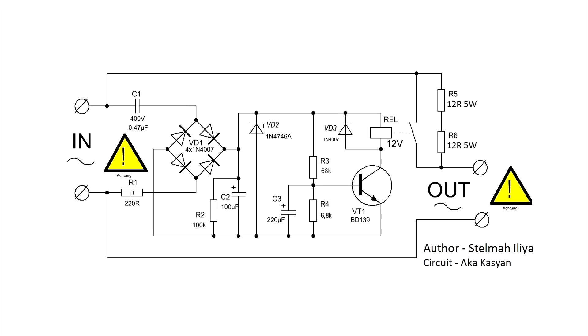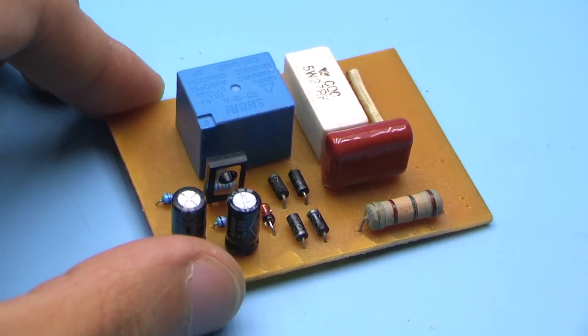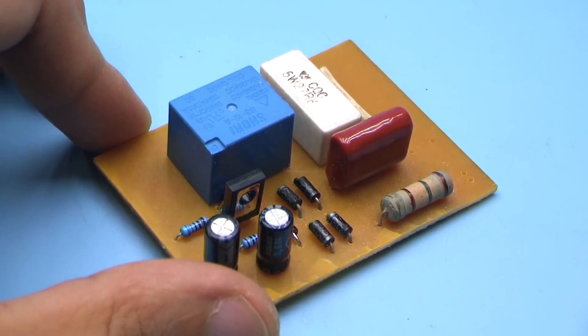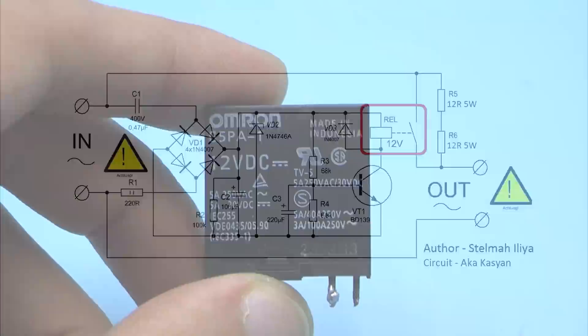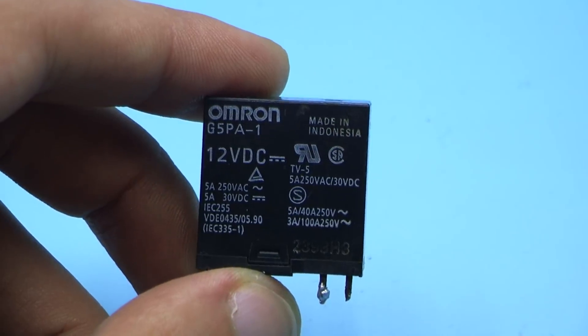In front of you, an external soft starter. This circuit provides a smooth start of a load with a delay. It is assembled on the basis of a relay. Yes, relay contacts aren't eternal, but they will serve for a few years exactly.